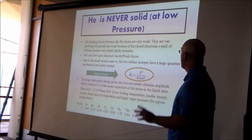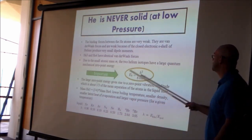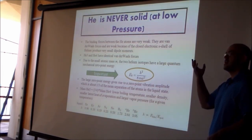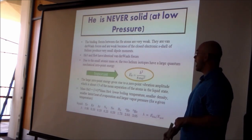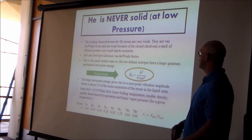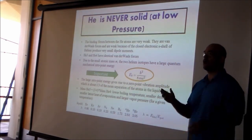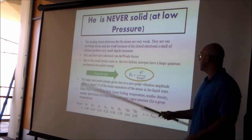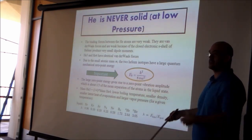The key point is that there is a zero-point energy. The zero-point energy is ℏ²/8mA², like the ground state energy for a particle in a box, and it goes as 1/m. Even at very low temperature, a particle will still be vibrating back and forth due to this zero-point energy. The zero-point energy is bigger for smaller masses.